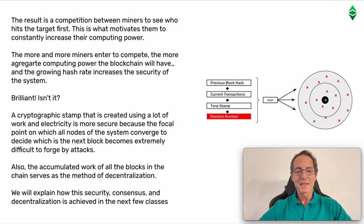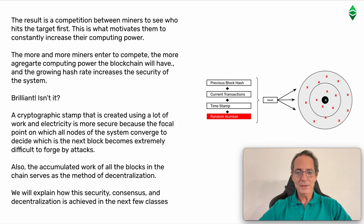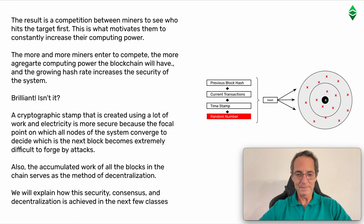The result is a competition between miners to see who hits the target first. This is what motivates them to constantly increase their computing power. The more miners enter to compete, the more aggregate computing power the blockchain will have, and the growing hash rate increases the security of the system.